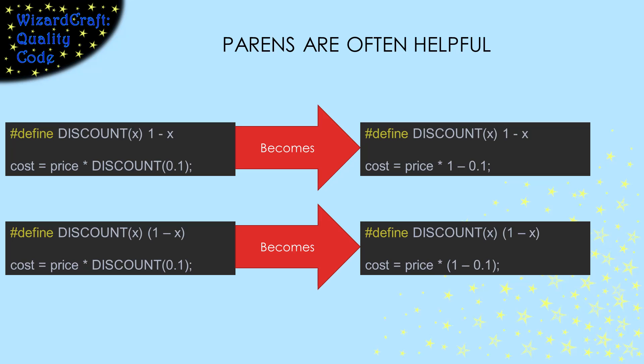When your pound-define includes a mathematical computation, it's often useful to put parentheses around the replacement string. This makes sure that if you use the define in the middle of a bigger calculation, the operation it encodes will be calculated before it is combined with the surrounding calculations. In this example, I defined discount assuming that x is the percent you should be discounted on a price.